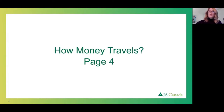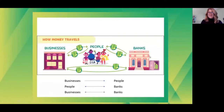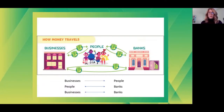Let's turn the page to page four and talk about how money travels. As you can see in this diagram, money has many ways of traveling. In the middle are people — that's you and I. At the ends, there are businesses and banks. People either work in a business and make money, or they go to the business and spend money. People take the money they earn and put it into the bank. The bank gives people money back either in the form of interest, or when people need to take out money. Banks also give money back to businesses and businesses put money in banks.